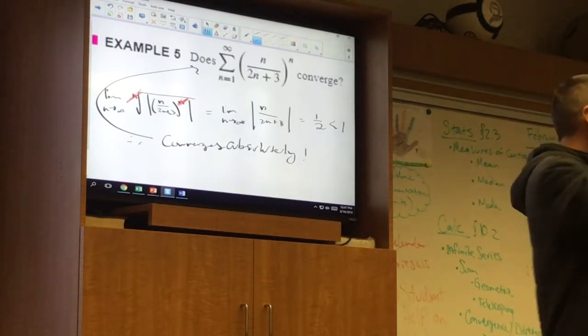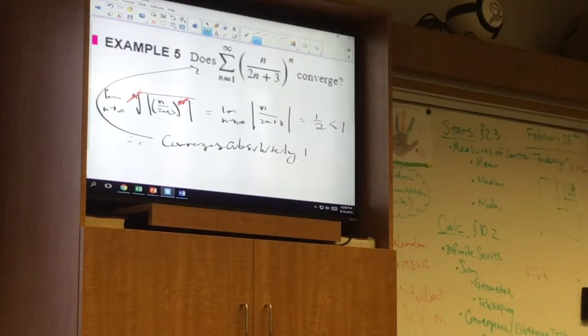But if ever you see a factorial in there, the first thing that I would try is the ratio test. Or a combination of factorials and exponentials and polynomials. Do the ratio test. If the whole thing is being raised to the n power, you go straight to the root test. And that's that. Easy enough, huh?